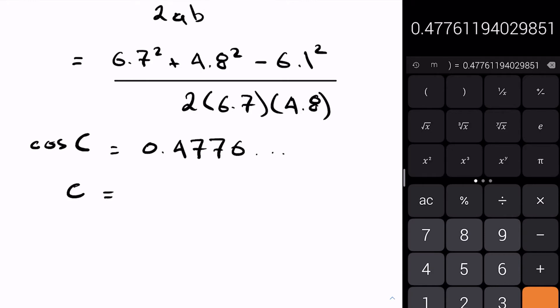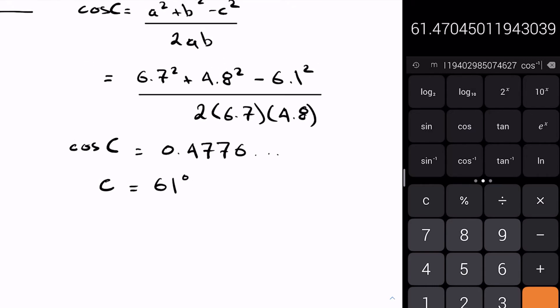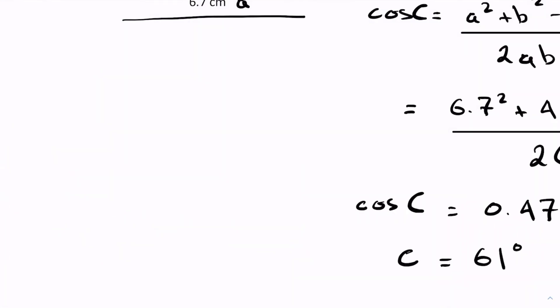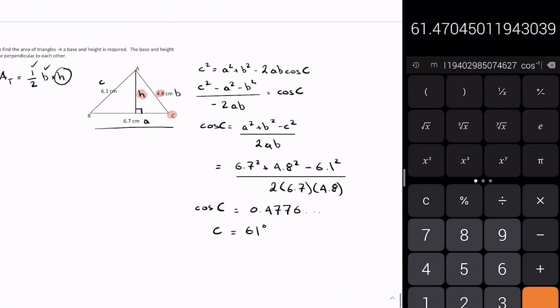And so the inverse of that will give me my angle C. So let's do cos inverse and that's going to be 61.47, let's just say 61 degrees. Let's go back to our scenario here.